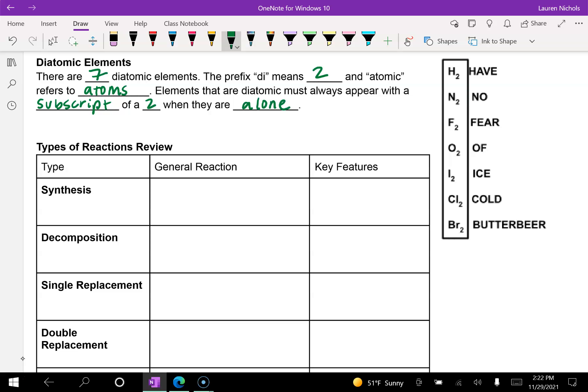So the seven diatomic elements are hydrogen, nitrogen, fluorine, oxygen, iodine, chlorine, and bromine. And you can remember it by this acronym of have no fear of ice cold butterbeer.